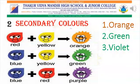Secondary colors are prepared by mixing two original primary colors. Yellow plus Red gives Orange. Red plus Blue gives Violet. Blue plus Yellow gives Green. Orange, Violet and Green are secondary colors.